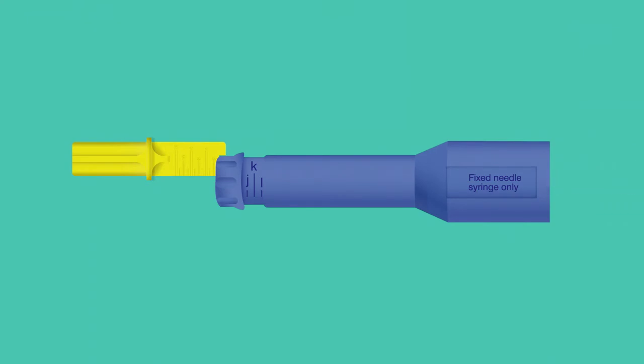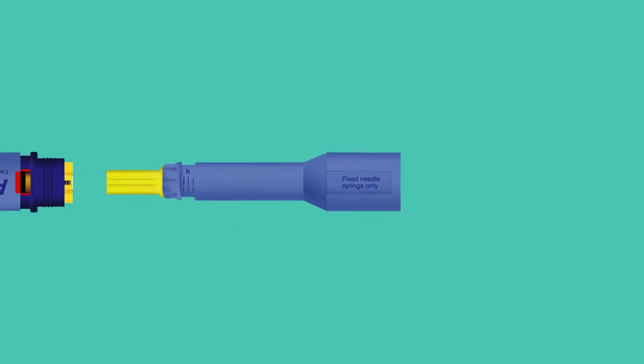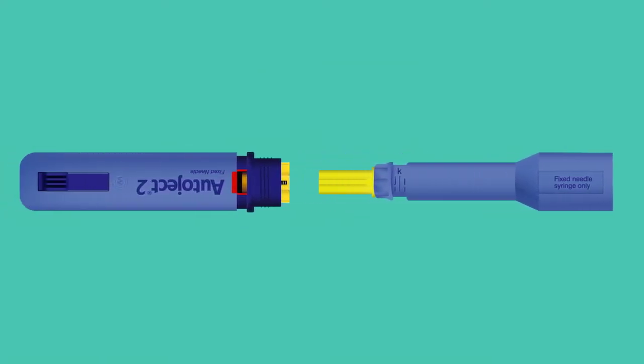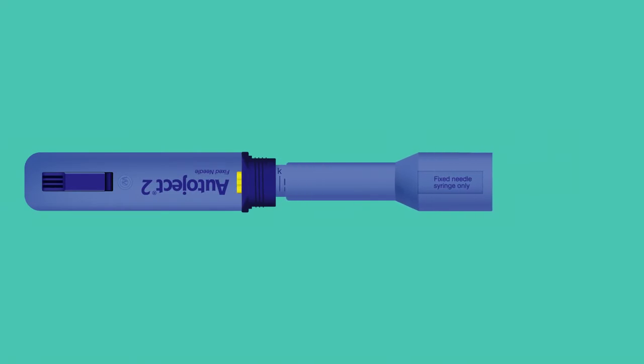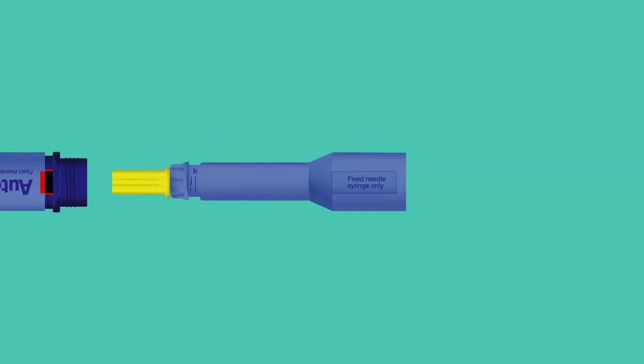To set the Autoject 2, place the yellow primer into the depth adjuster at the end of the syringe housing. Place the primer against the plunger and push it into the injector body until it will go no further. You will hear the device cock. Remove the housing from the body and the yellow primer from the depth adjuster.